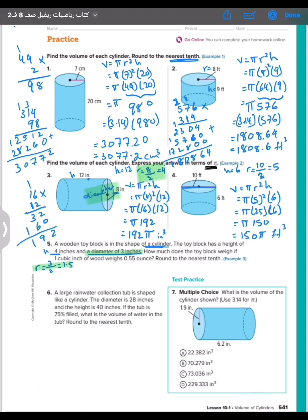How much does the toy block weigh if one cubic inch of wood weighs 0.55 ounce? So at the beginning, let's write the formula: v equals pi r squared h. V equals pi times r, it's 1.5 squared, times h, it is 4.